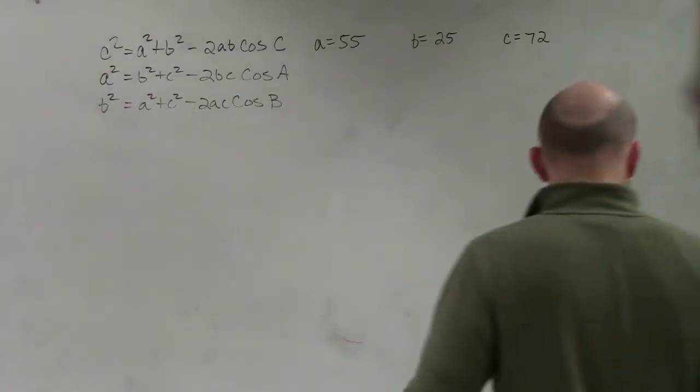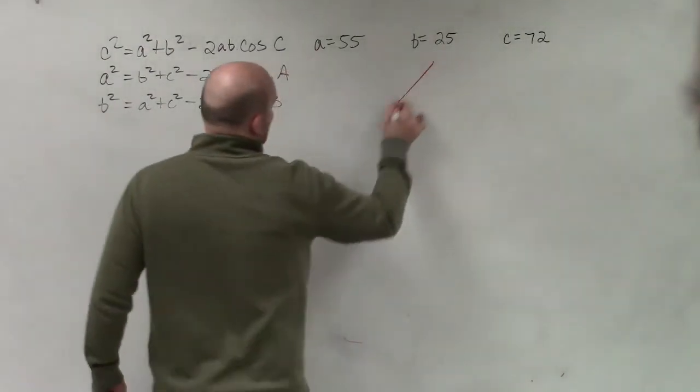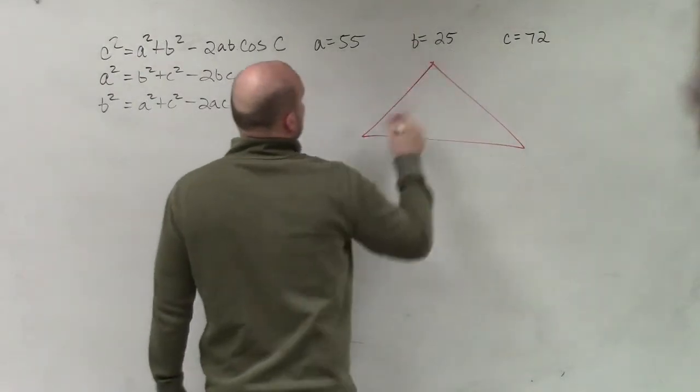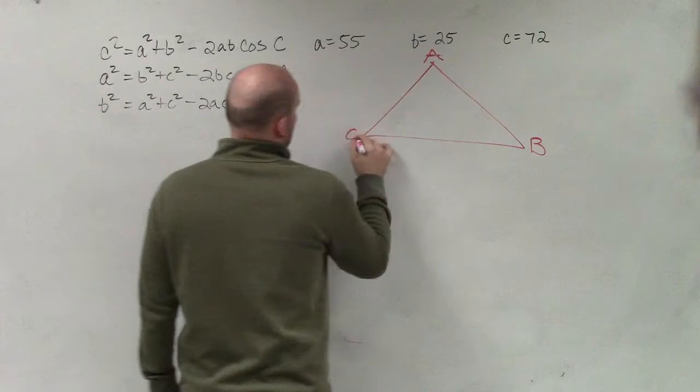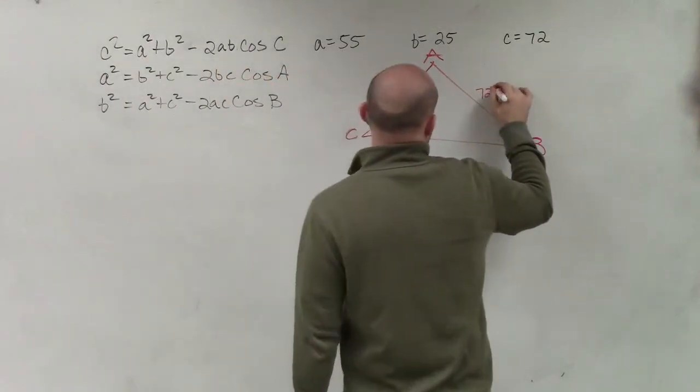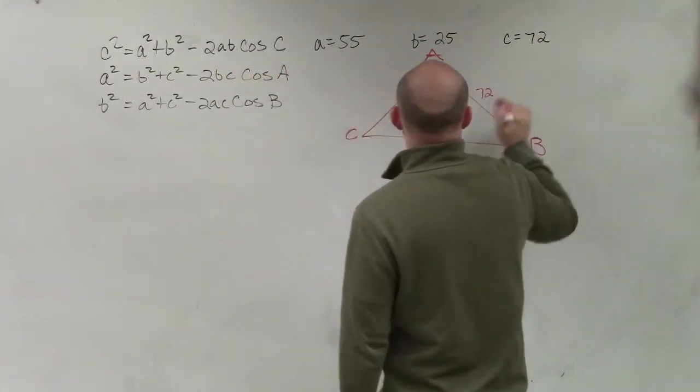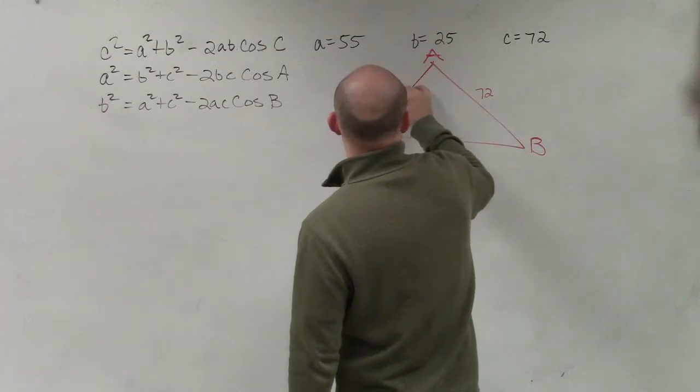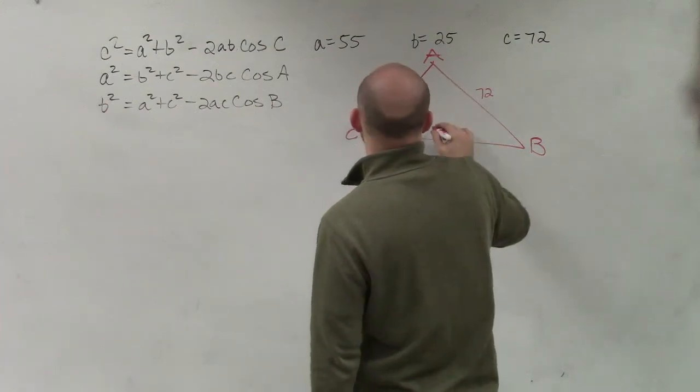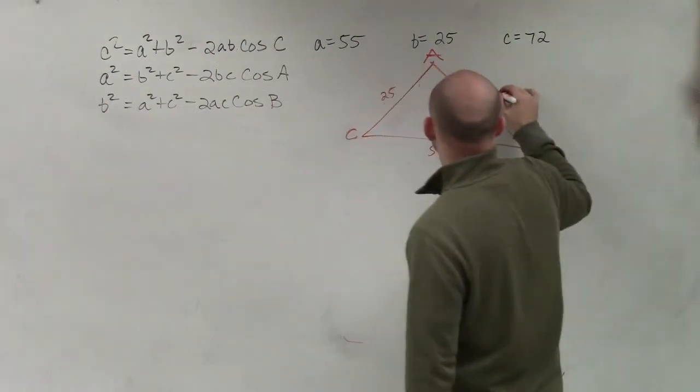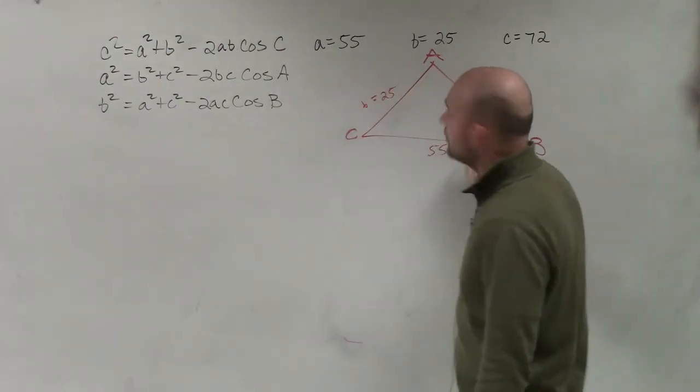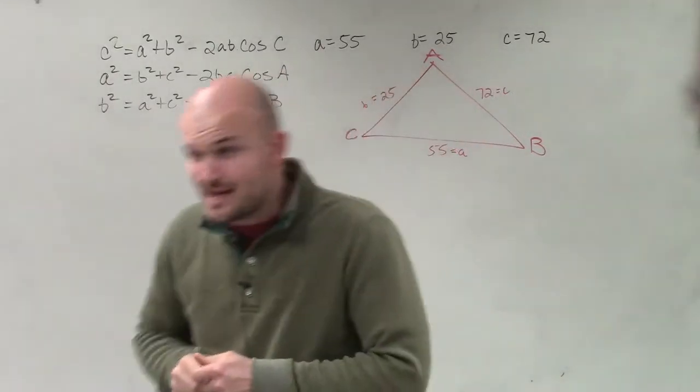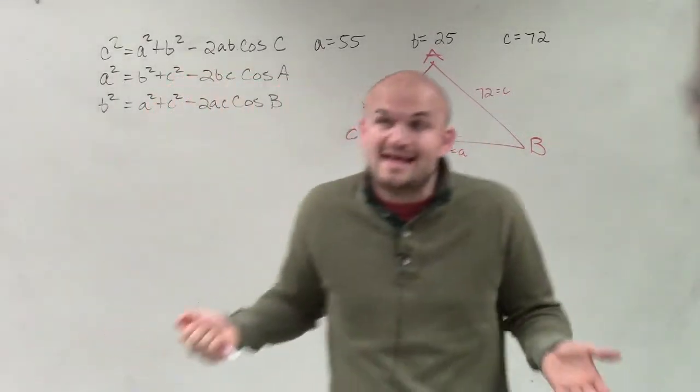By applying the law of sines, when I look at this triangle, what I notice is here's 72. Not 72 degrees. B is 25 and A is 55. Now, we obviously notice that we cannot apply the law of sines, right? Because we need one of those angles.